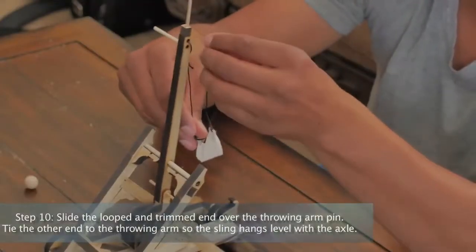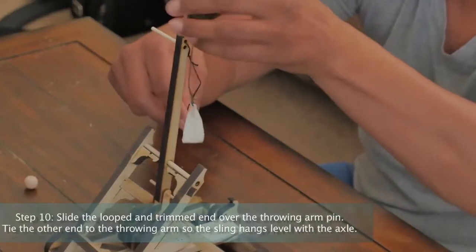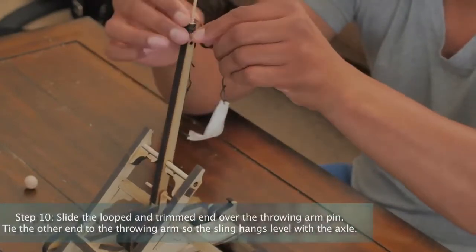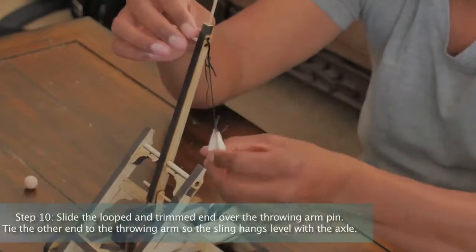Step 10: Slide the looped and trimmed end over the throwing arm pin. Tie the other end to the throwing arm so the sling hangs level with the axle.